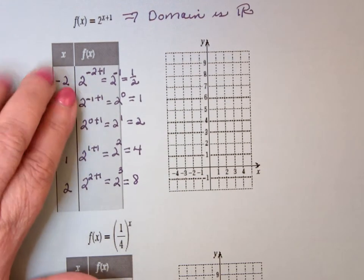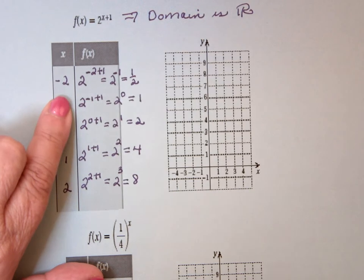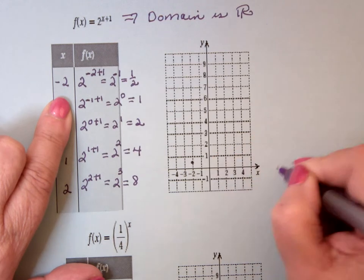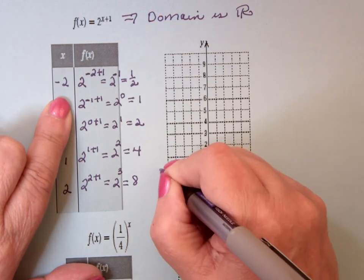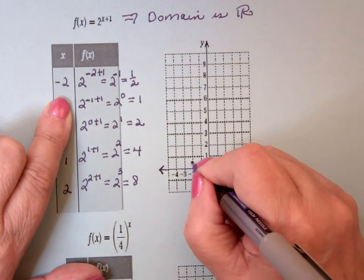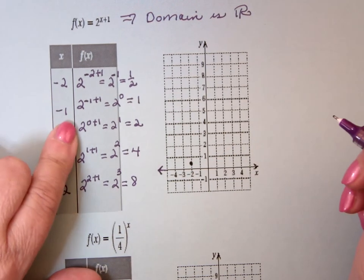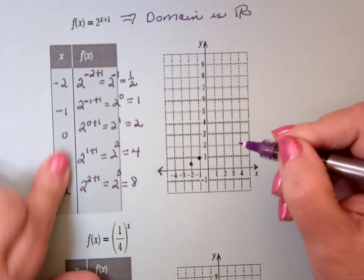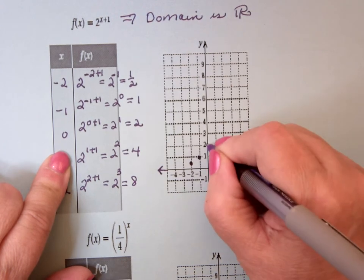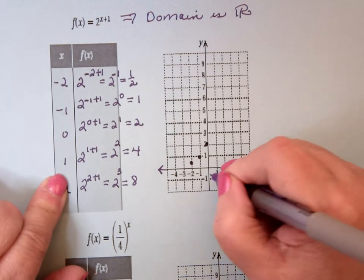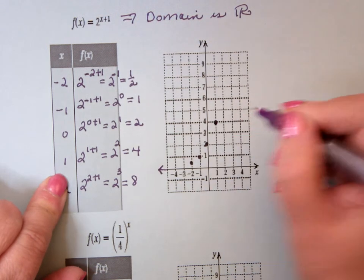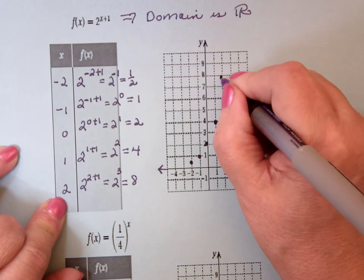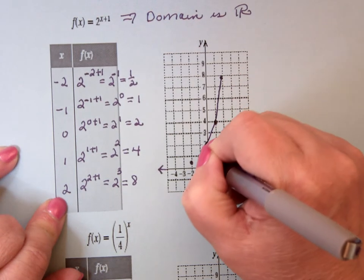And then I graph what I've got. If x equals negative 2, y equals 1 half, 1 half. Let's see, here's the x-axis right here. And if x equals negative 1, y equals 1. If x equals 0, y equals 2. If x equals 1, y equals 4. If x equals 2, y equals 8. And if I just connect the dots, I start to get a shape.